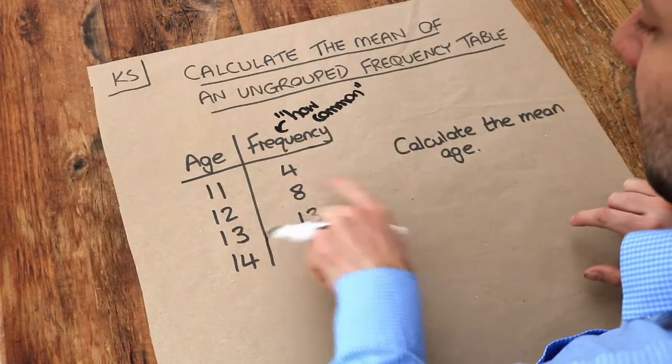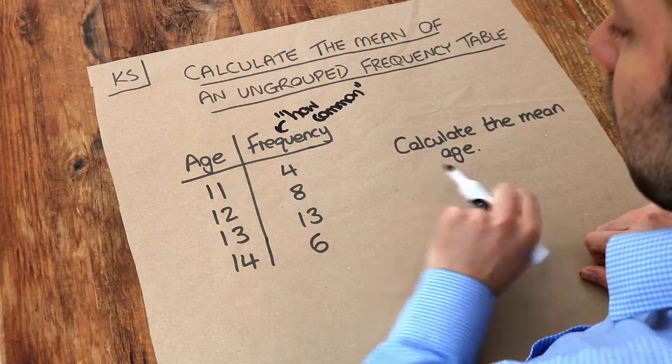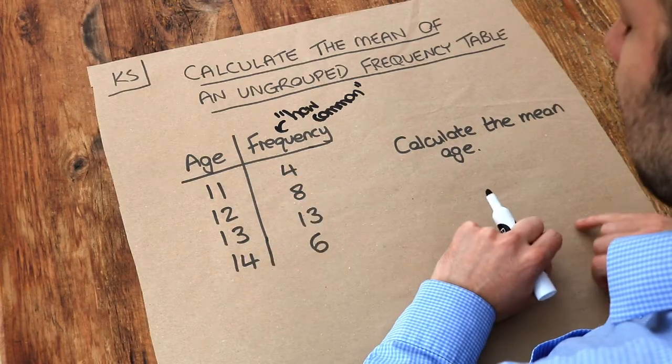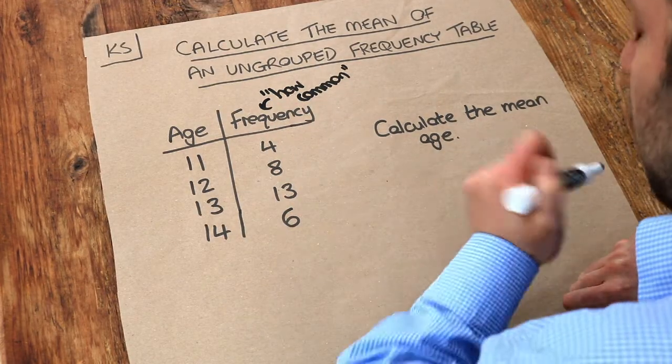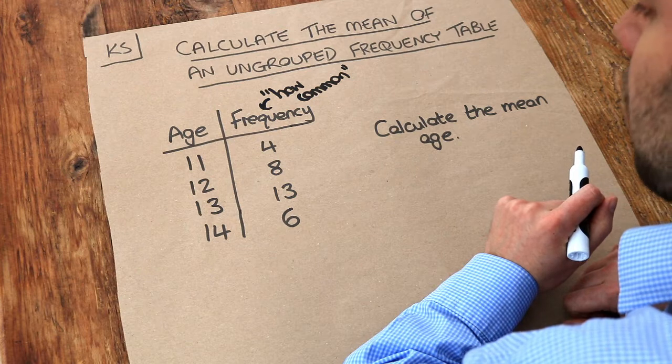So for example this says we've got four people age 11, eight people age 12, etc. Now let's think how do we usually find the mean of some values? Well we'd add up all the values and divide by how many there are.